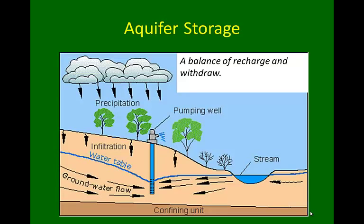Bringing this all together, the storage in an aquifer — the amount of water available for pumping — depends on how much water comes in versus how much is pumped out. We can think of this as a balance between recharge from precipitation to the water table and withdrawal from pumping. The volume of water stored is growing or shrinking based on the balance of these inputs and outputs.